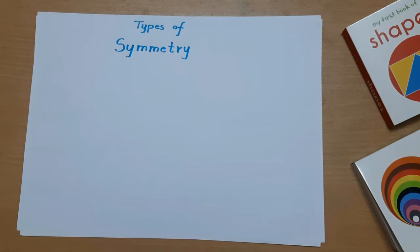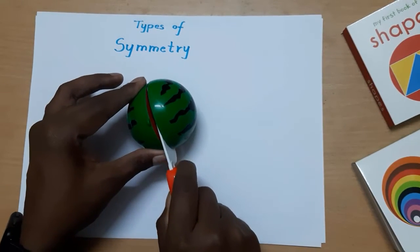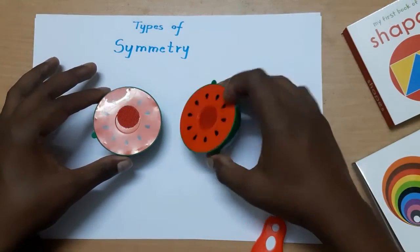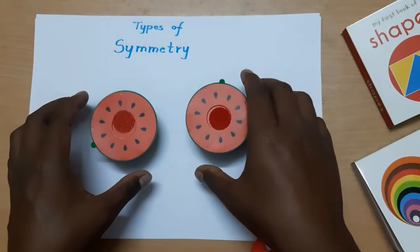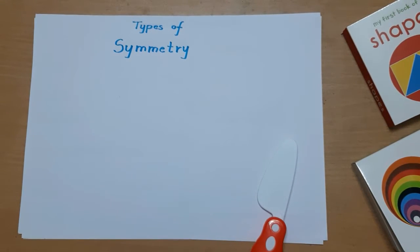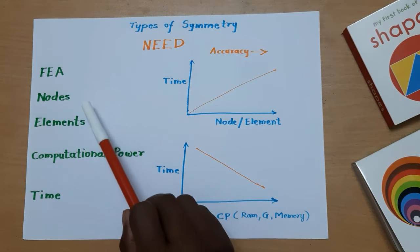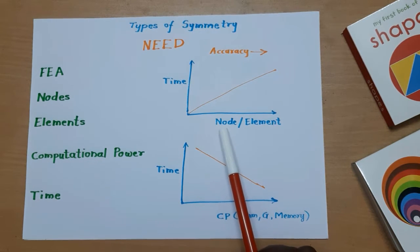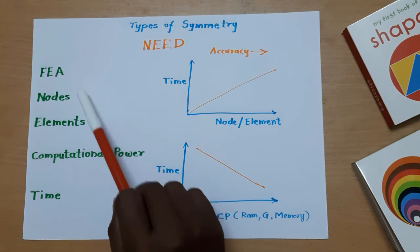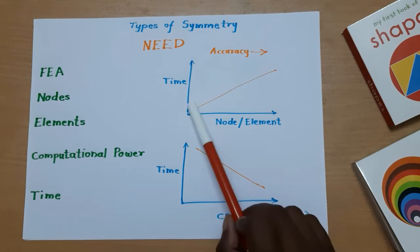Before that, here is a small demo — here is a watermelon. When we cut it, you can see it is converted into two halves which are identical and equal to each other. Based on this example we will move ahead. In FEA, nodes and elements are the most important parts. When the number of nodes or elements increases, it increases the solving time.